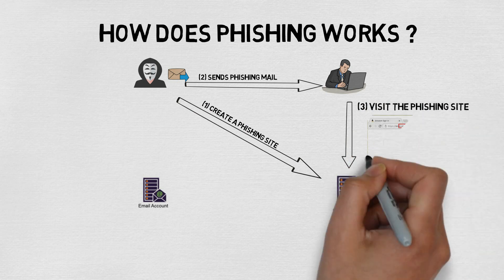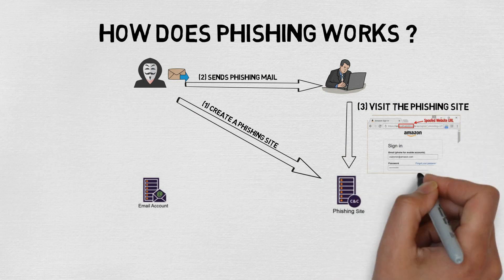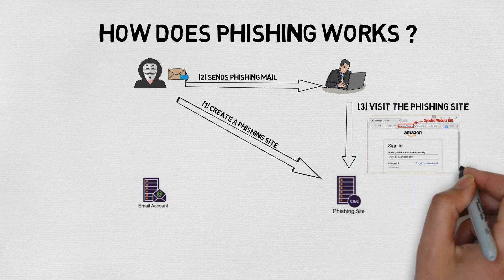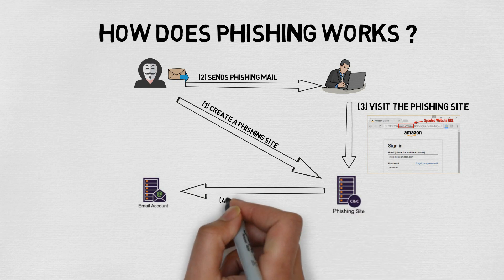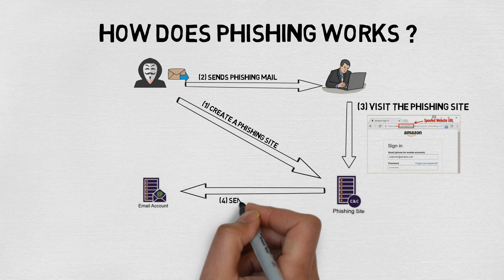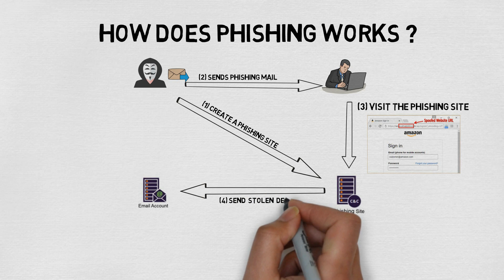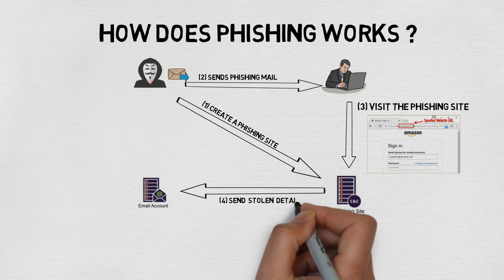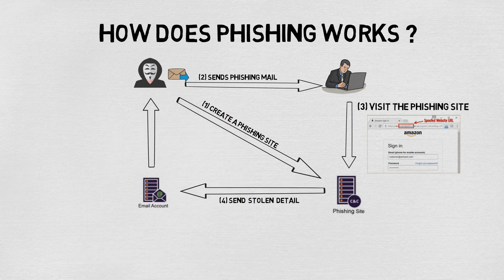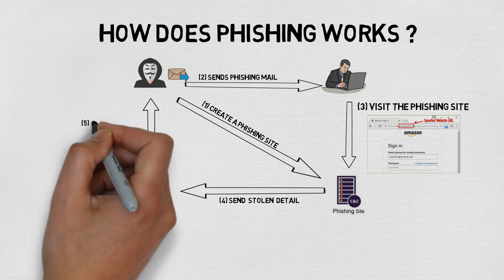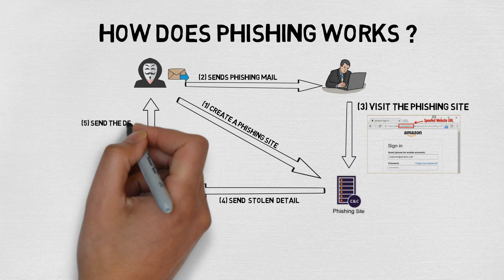The phishing page would look like a page that does not have an HTTPS URL. The phishing kit processes the credential details and sends them to an external email account. Finally, the attacker gets the details like bank account number, password, etc.